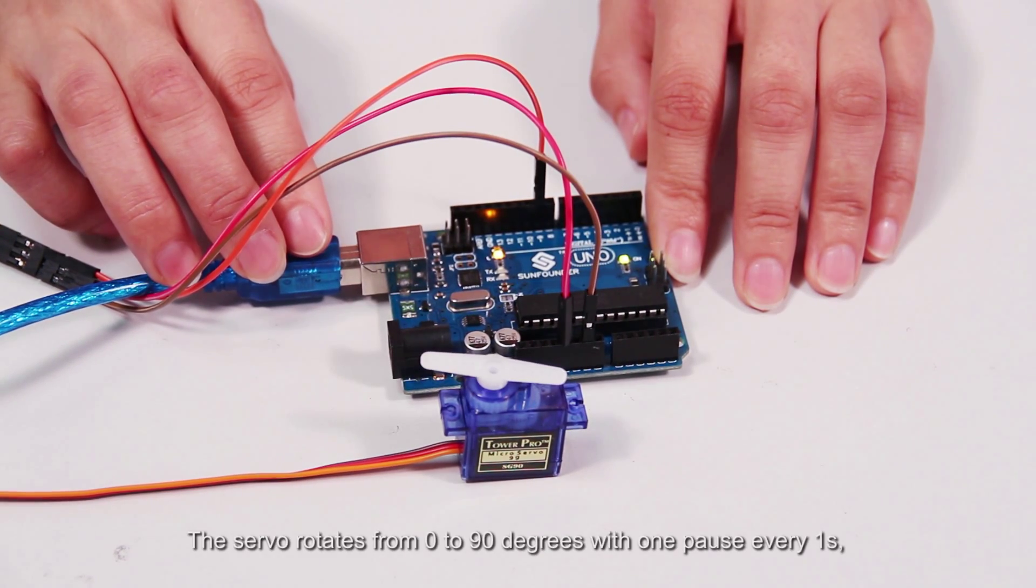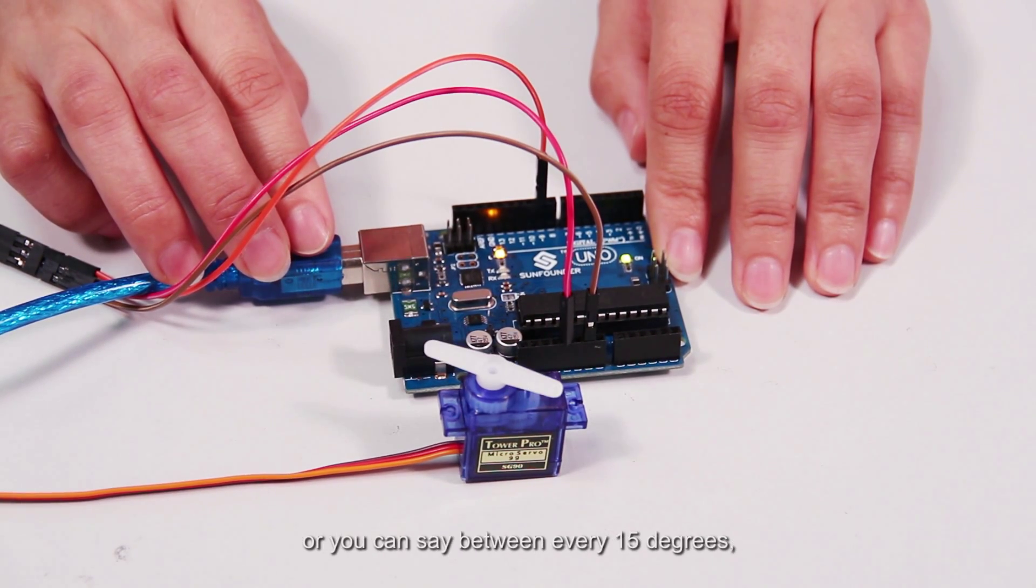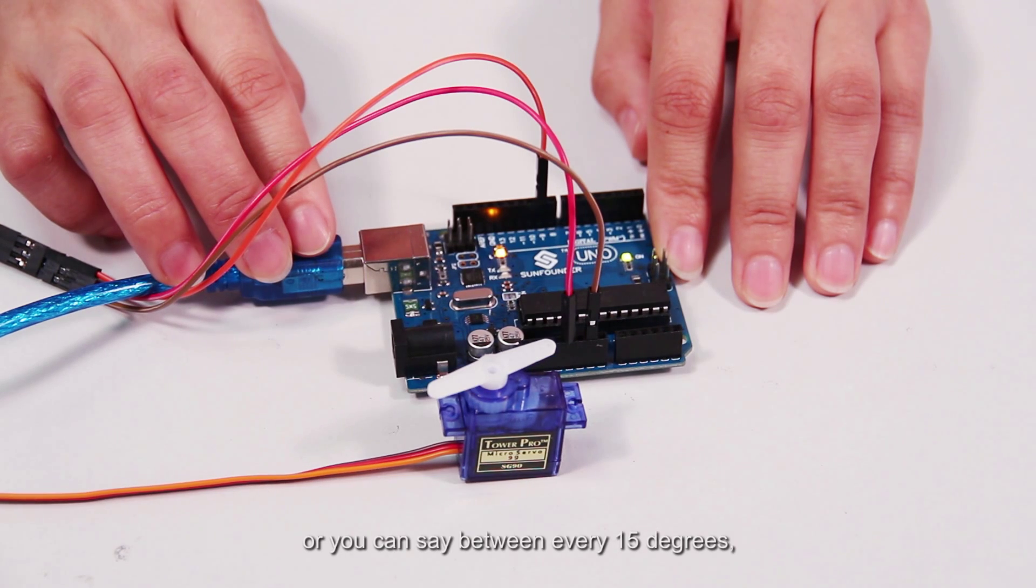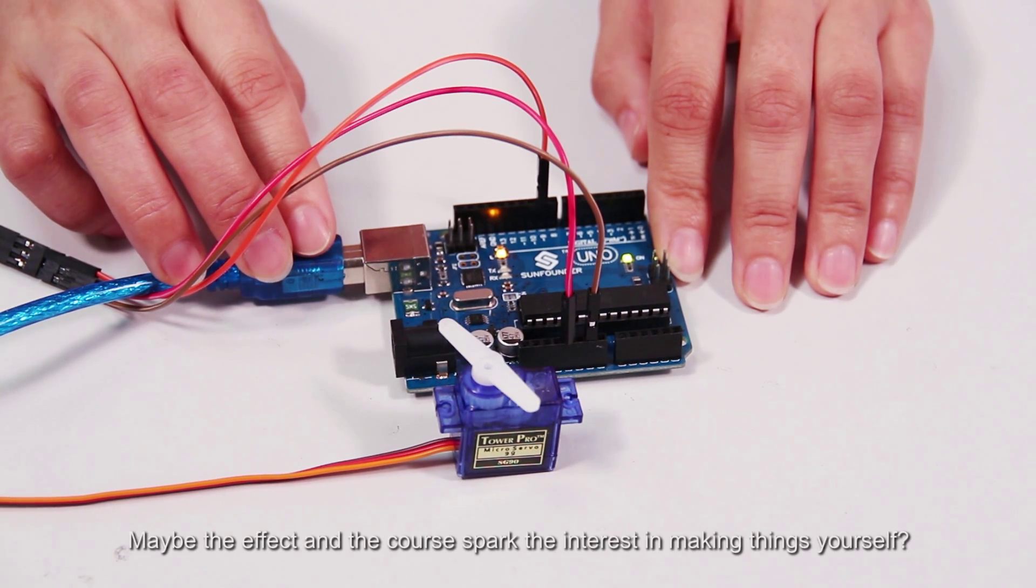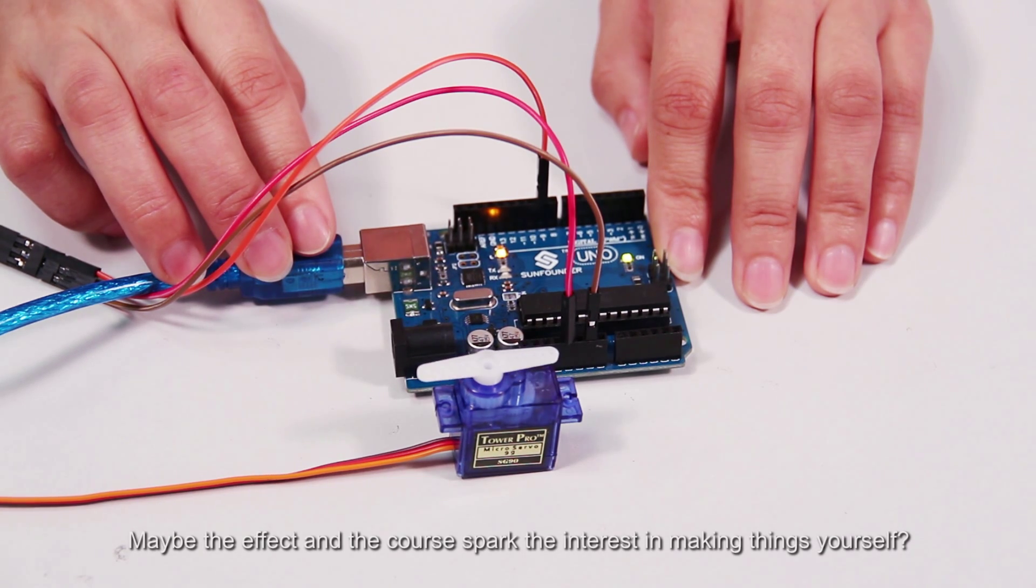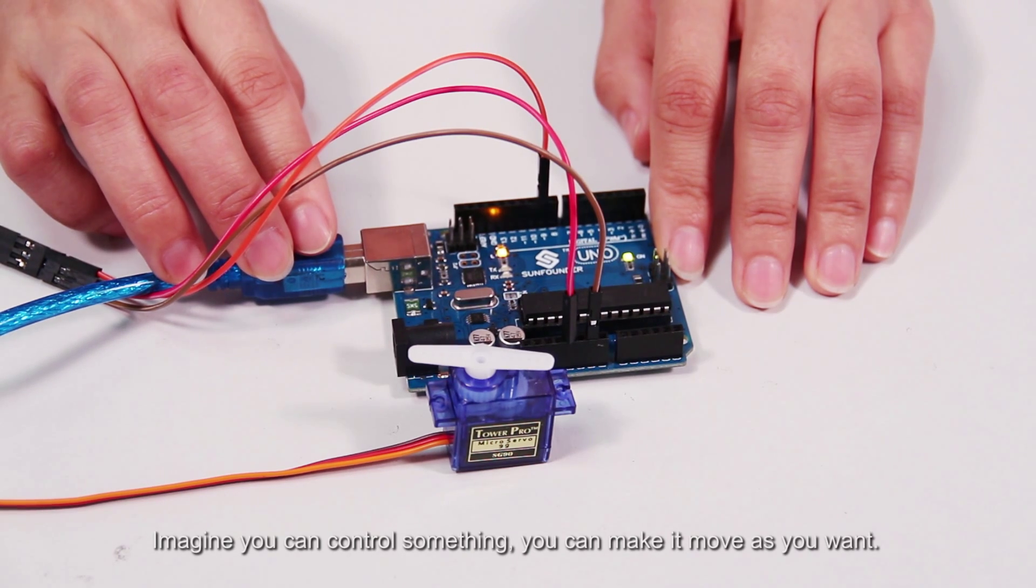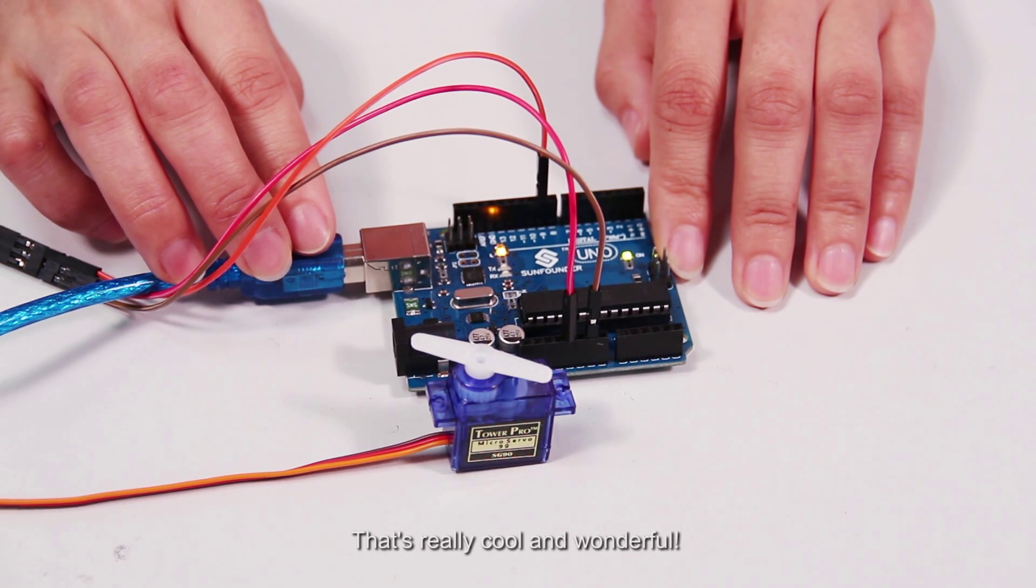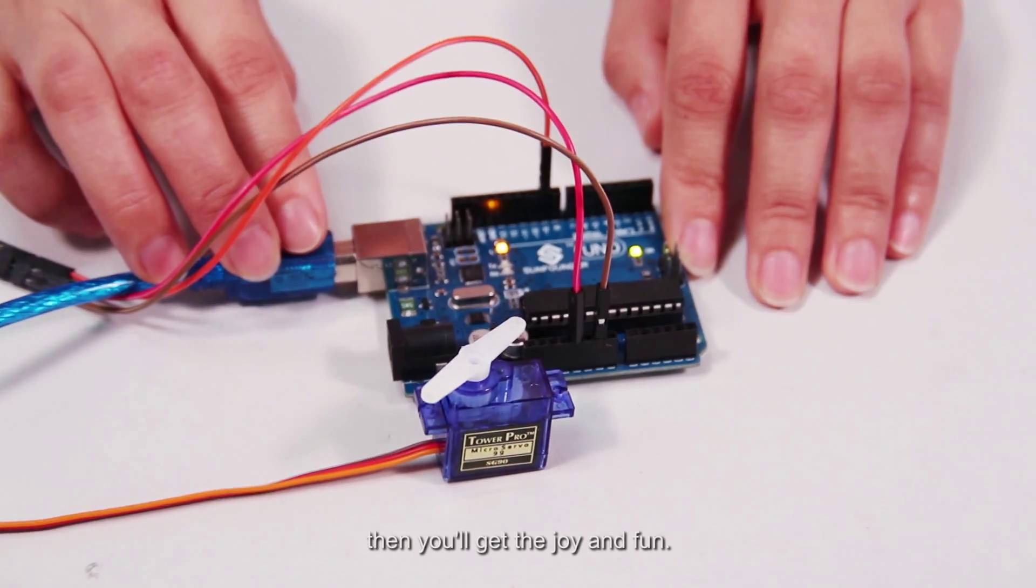The servo rotates from 0 to 90 degrees with one pause every one second, or you can say between every 15 degrees, and then back and forth. The rotation repeats without determination until the servo is powered off. Maybe the effect and the cause spark the interest in making things yourself? If it does, why hesitating? Imagine you can control something. You can make it move as you want. That's really cool and wonderful. Unpack your tools and start doing it, then you'll get joy and fun.